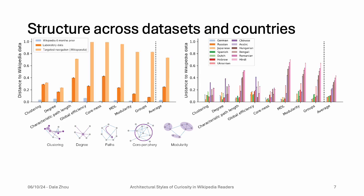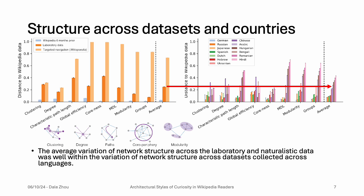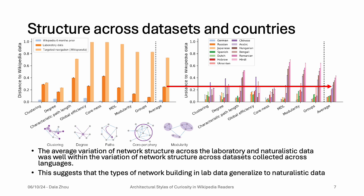Starting from the left, the most similar data set — no surprise — was the mobile app data set, just collected six months prior to the one we're focusing on. The next most similar was the laboratory data, and the most dissimilar was a form of targeted navigation in a game called Wikispedia, where participants were asked to navigate using the shortest path or fewest clicks possible from a source to a target page. On the right, you can see the same network metrics across different languages of Wikipedia. The key point is that the average distance from the laboratory data to the mobile app data falls well within the natural variation seen across different Wikipedia languages, suggesting that the types of network building in the lab can be generalized to identify hunter-like and busybody styles in naturalistic data.